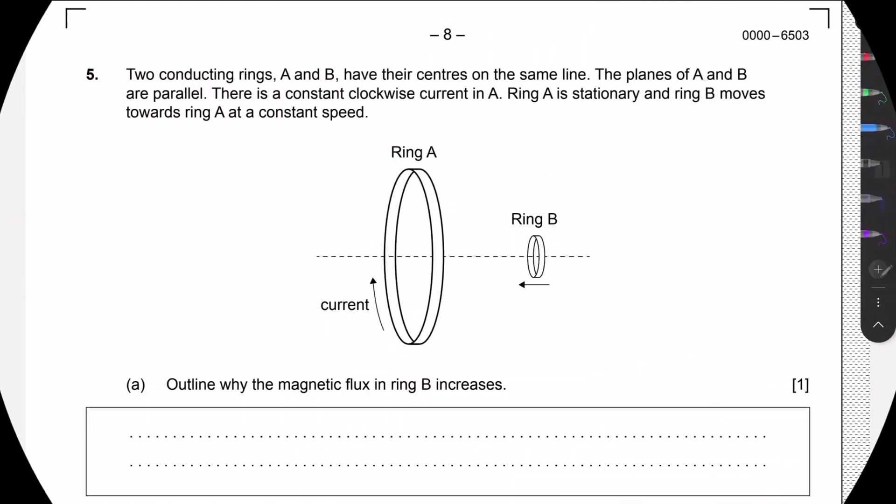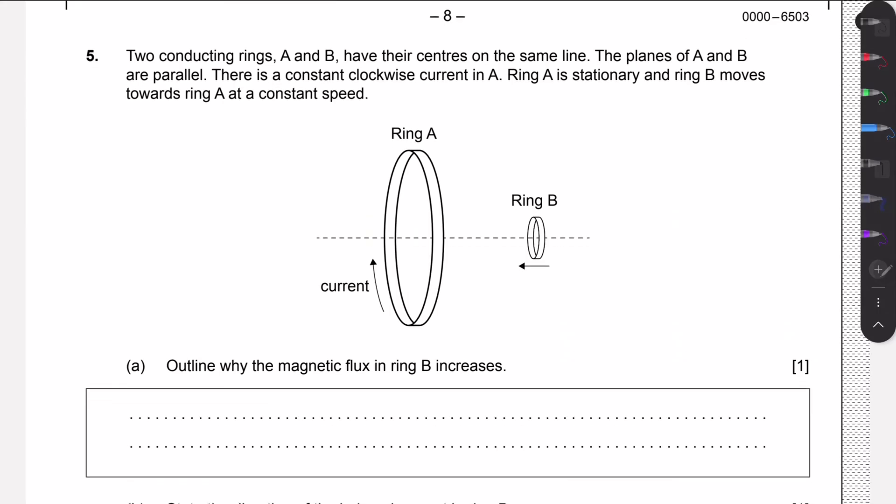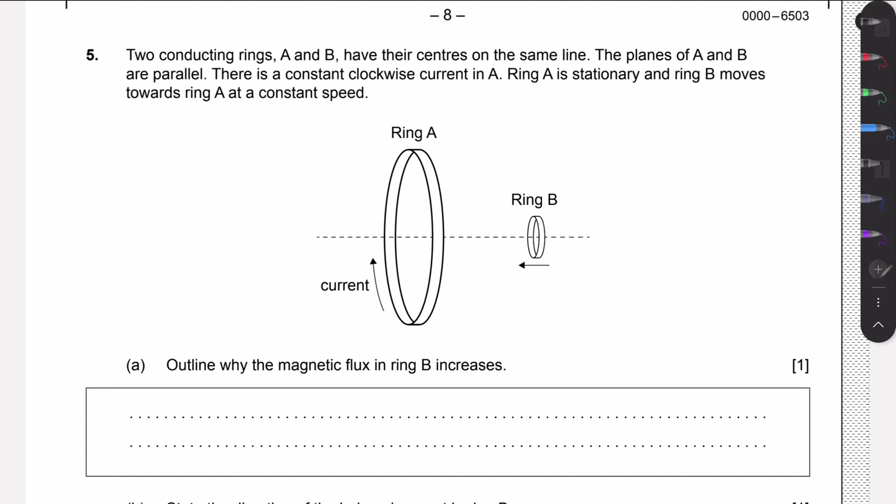Hello guys, welcome to this new video. So now we are going to work through question 5 in the May 25 specimen paper 2. We are given these two conducting rings A and B. Their centers are on the same line and the planes of A and B are parallel. There is a constant clockwise current in A, so it goes like this. Ring A is stationary and ring B moves towards ring A at constant speed.